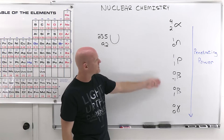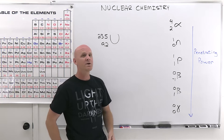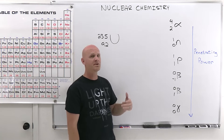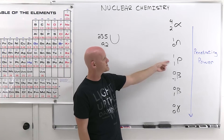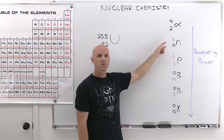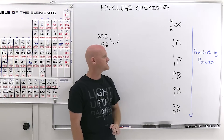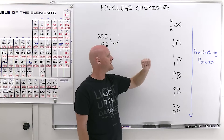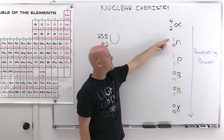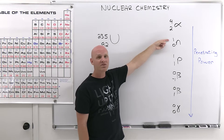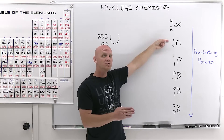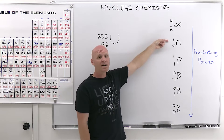There are some nuclear particles we need to talk about before we can dive too far. Some of these will be familiar, like the proton and the neutron. These are their symbols in this context — P for proton, N for neutron. Your upper number is the mass number, which is typically the number of protons and neutrons combined, rounded to the nearest whole number.